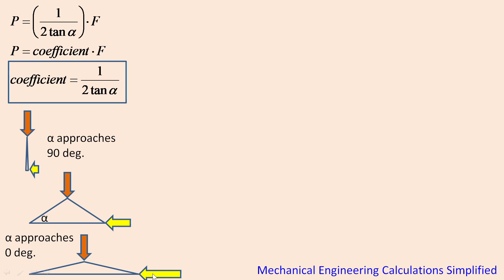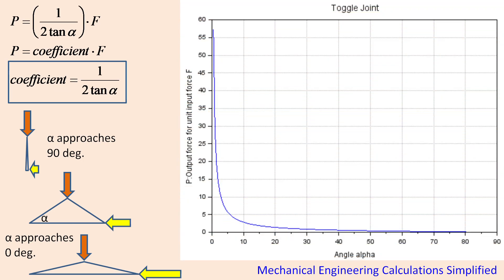Now what happens here when alpha approaches zero, almost zero, this vertical force creates an infinitely amplified force here. Why is it so? If I plot the coefficient with respect to alpha, with respect to the angle, you can see here when the angle approaches zero, the alpha value approaches zero, this coefficient becomes infinite.